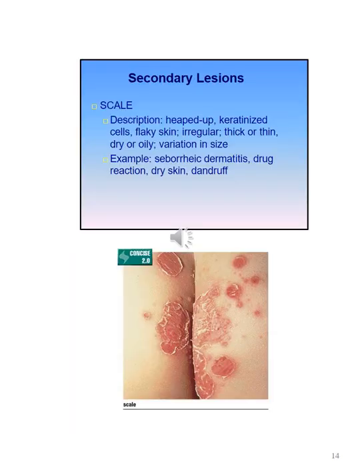For the next few slides we are going to be discussing secondary lesions. Examples include scale, lichenification, keloid, scar, excoriation, fissure, erosion, ulcer, and atrophy. A scale can be described as heaped-up flaky skin with keratinized cells, irregular, thick or thin, dry or oily, and a variation in size. Examples include seborrheic dermatitis, drug reaction, dry skin, and dandruff.